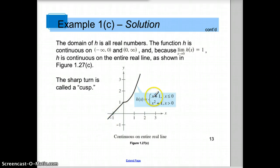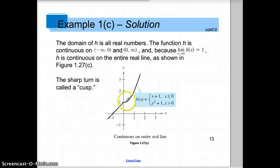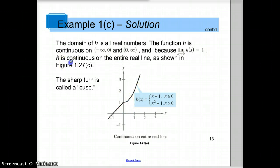Here's a graph with a piecewise function: x + 1 for the first piece and x² + 1 for the second piece. The graph is continuous between negative infinity to zero and zero to infinity. The y-value from the left and the y-value from the right go to the same value. So even though there's a sharp turn on the graph — called a cusp — the graph is still continuous. The two pieces put together are continuous on the entire real line.